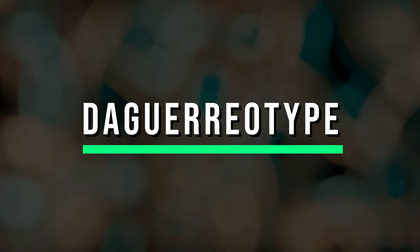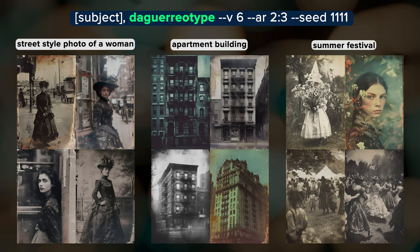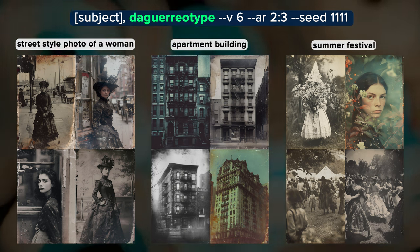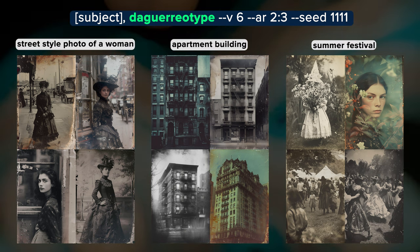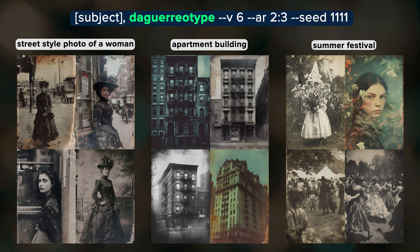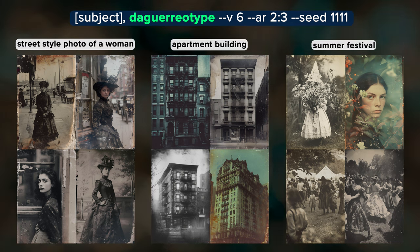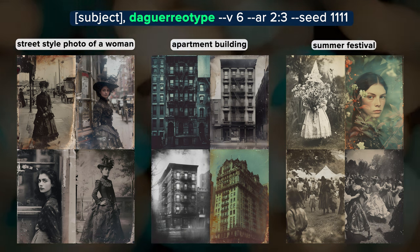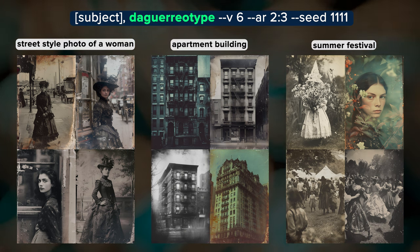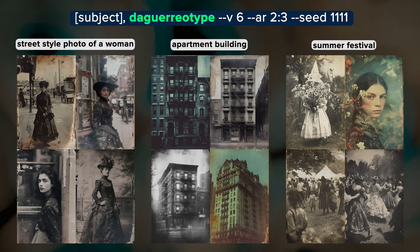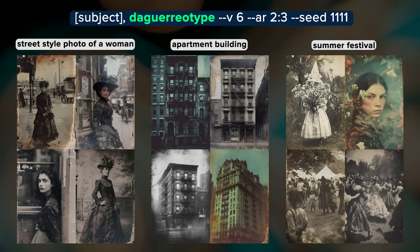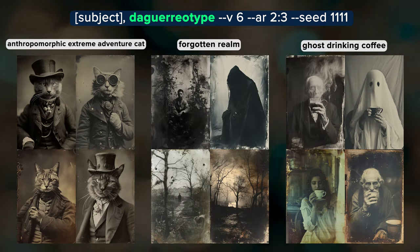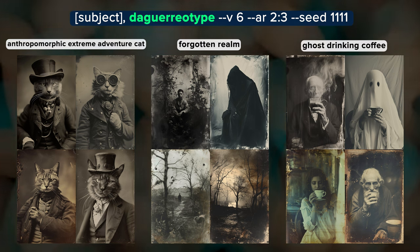Daguerreotype — the first publicly available photographic process, introduced in 1839, involved a number of dangerous chemicals. Using 'daguerreotype' in your prompt will give you a classic muted old-timey aesthetic with primarily black and white or brown-tinted images. Vignettes and rough borders are also common. This is a great example of how a style word can affect the subject matter: most daguerreotypes in the real world are old images from the 1800s featuring specific fashion like poofy dresses and older building architecture, so when we prompt for daguerreotype we're more likely to get those older clothing and building styles.